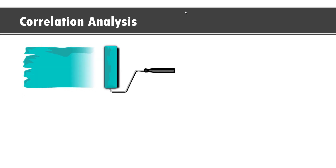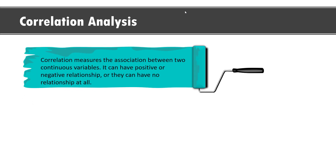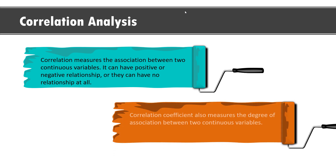Hi, all. Welcome back. In this session, we will discuss how one can quantify the relationship between two numerical variables using correlation analysis. Correlation statistics measures the association between two continuous variables. Variables can have positive or negative relationship, or they can have no relationship at all. Correlation statistics also measures the degree of association between two continuous variables.